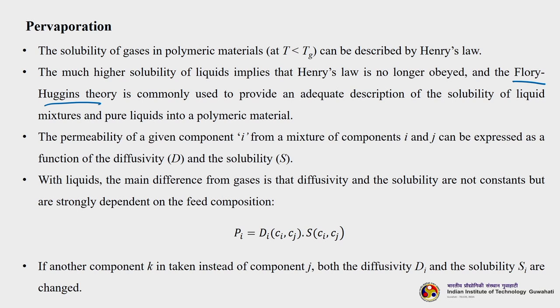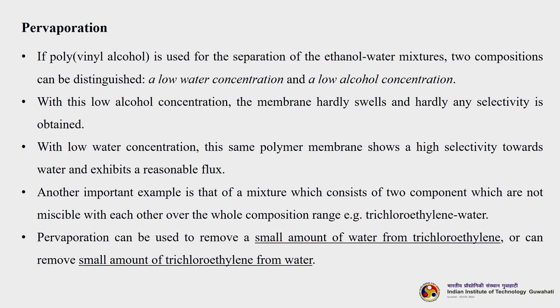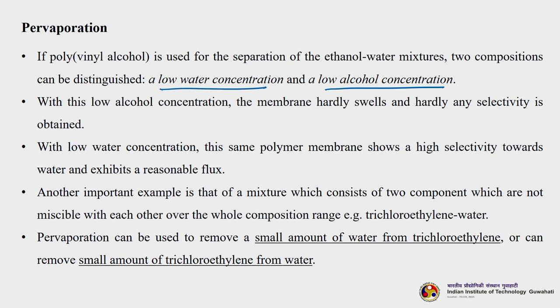The permeability of a given component i from a mixture of components i and j can be expressed as a function of diffusivity and solubility. With liquids, the main difference from gases is that diffusivity and solubility are not constant but are strongly dependent on feed composition. You can write Pi equals Di(Ci, Cj) times S(Ci, Cj). If polyvinyl alcohol is used for the separation of ethanol-water mixtures, two compositions can be distinguished: low water concentration and low alcohol concentration. With low alcohol concentration, the membrane hardly swells and hardly any selectivity is obtained.